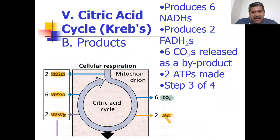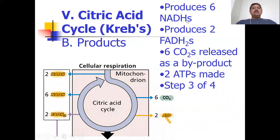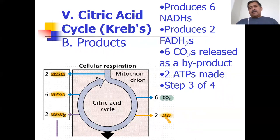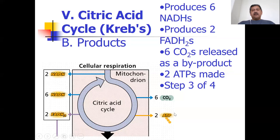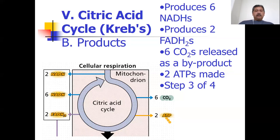What you need to know about the Krebs cycle is: you get six NADHs, which at three ATPs each gives 18 ATPs. You get two FADH2s, which at two ATPs each gives four ATPs. You get carbon dioxide released as a byproduct — that's why we breathe out CO2. And on top of all that, two ATPs are made directly through substrate level phosphorylation. That's what you need to know about the citric acid cycle.